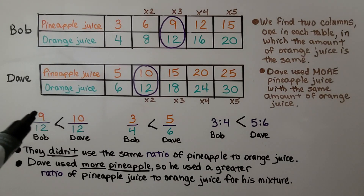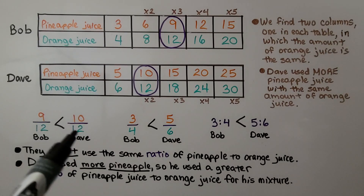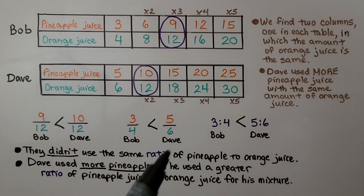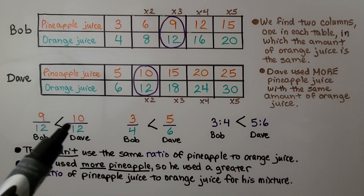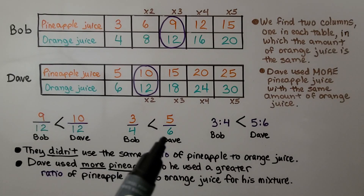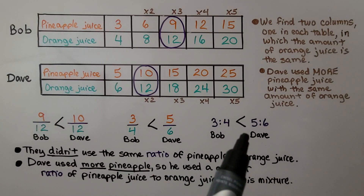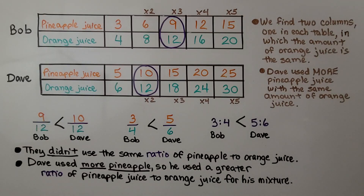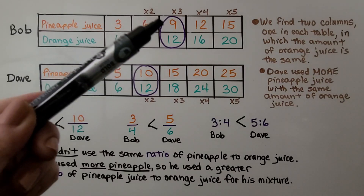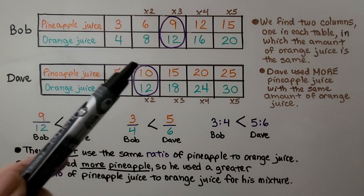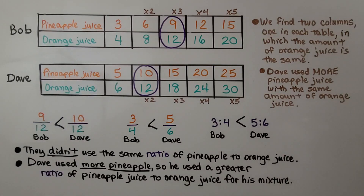Dave used more pineapple juice with the same amount of orange juice — 10 cups versus 9. So Bob is 9 twelfths (or 3 fourths) and Dave is 10 twelfths (or 5 sixths). Since 9 twelfths is less than 10 twelfths, 3 to 4 is less than 5 to 6. They didn't use the same ratio; Dave used a greater ratio of pineapple to orange in his mixture.